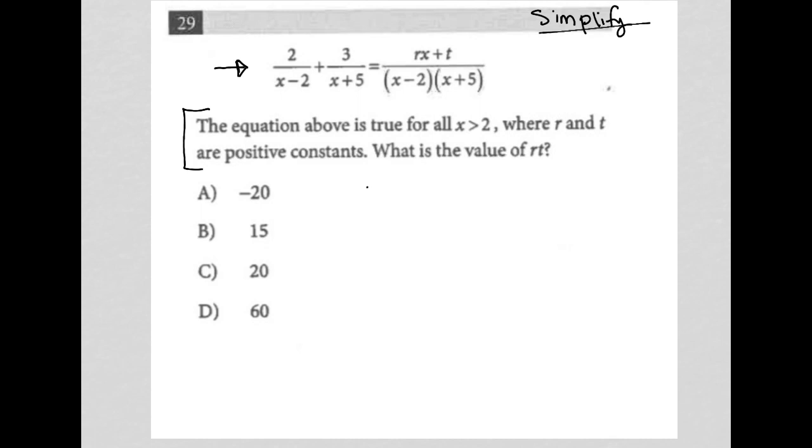So how do I simplify what I have here? I have 2 over x minus 2 plus 3 divided by x plus 5 is equal to rx plus t over x minus 2 times x plus 5.